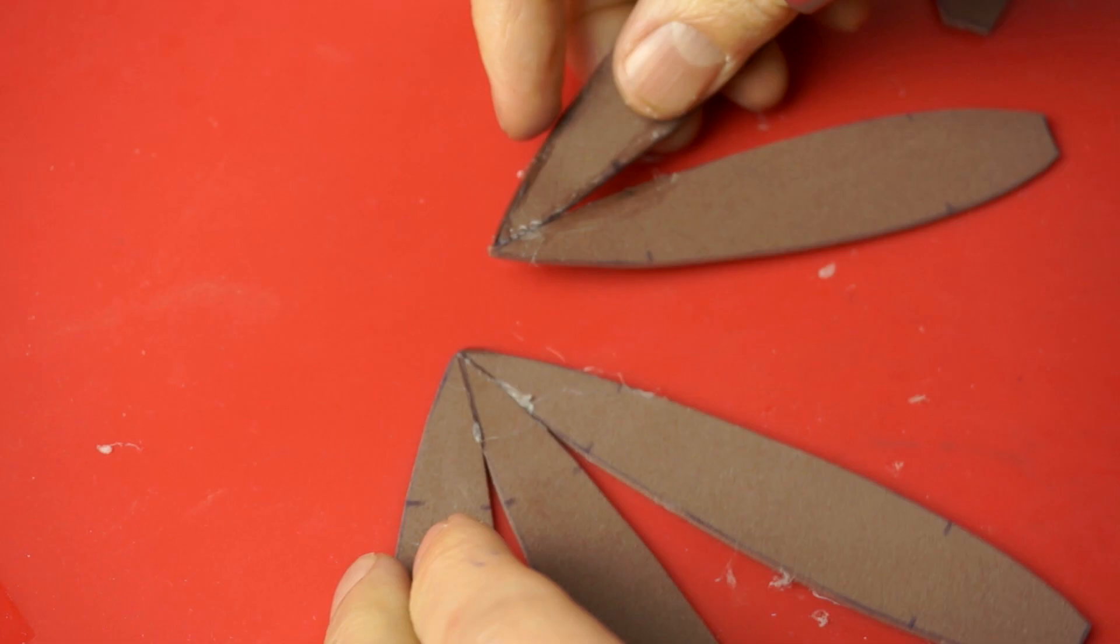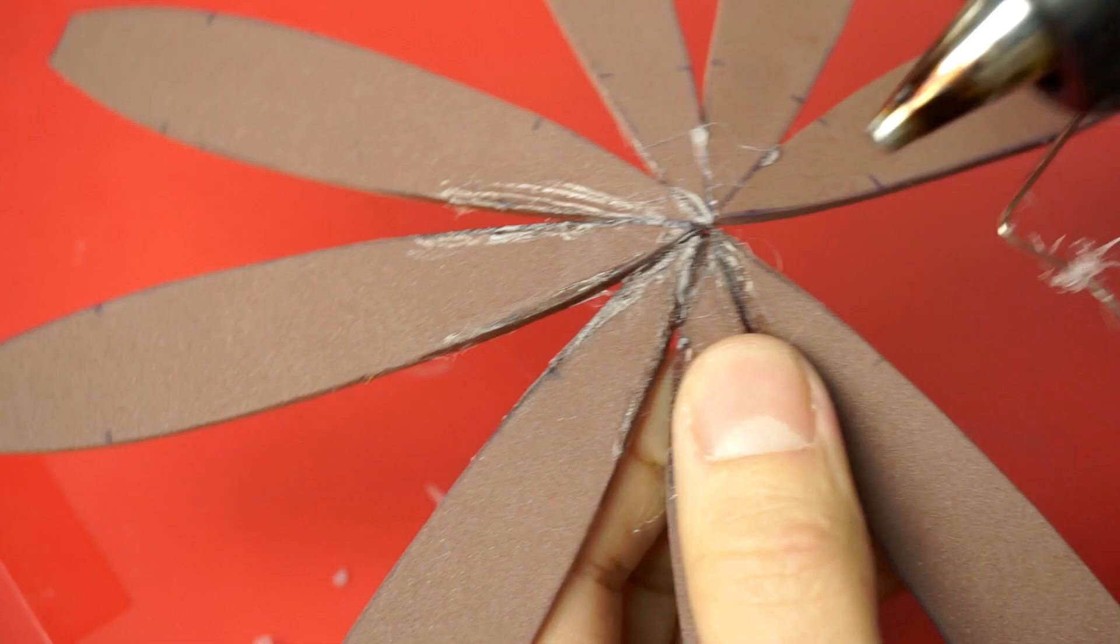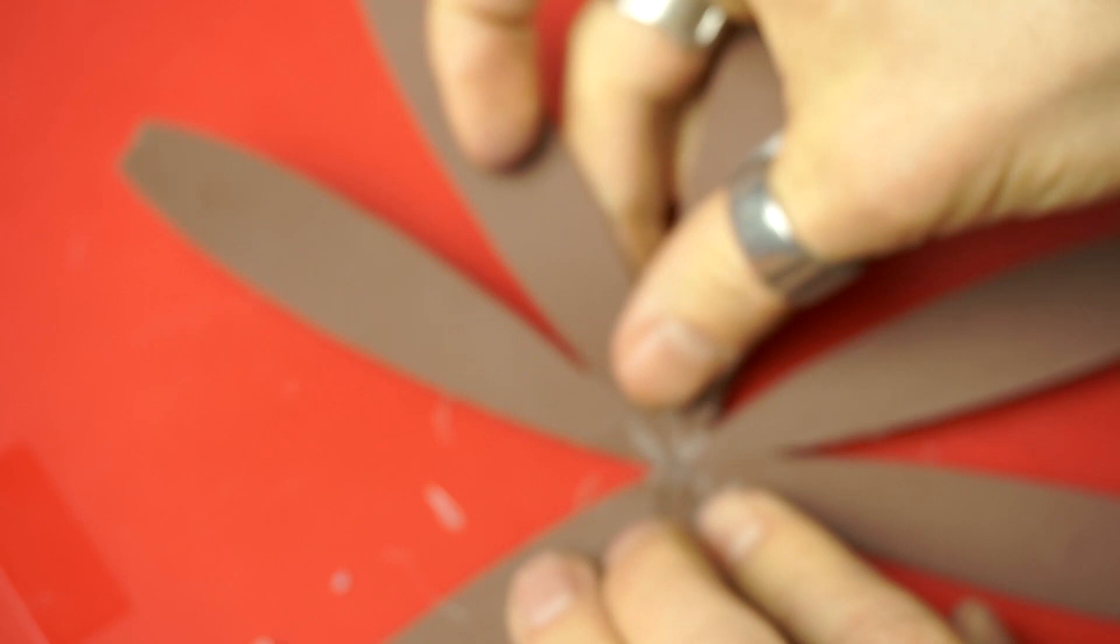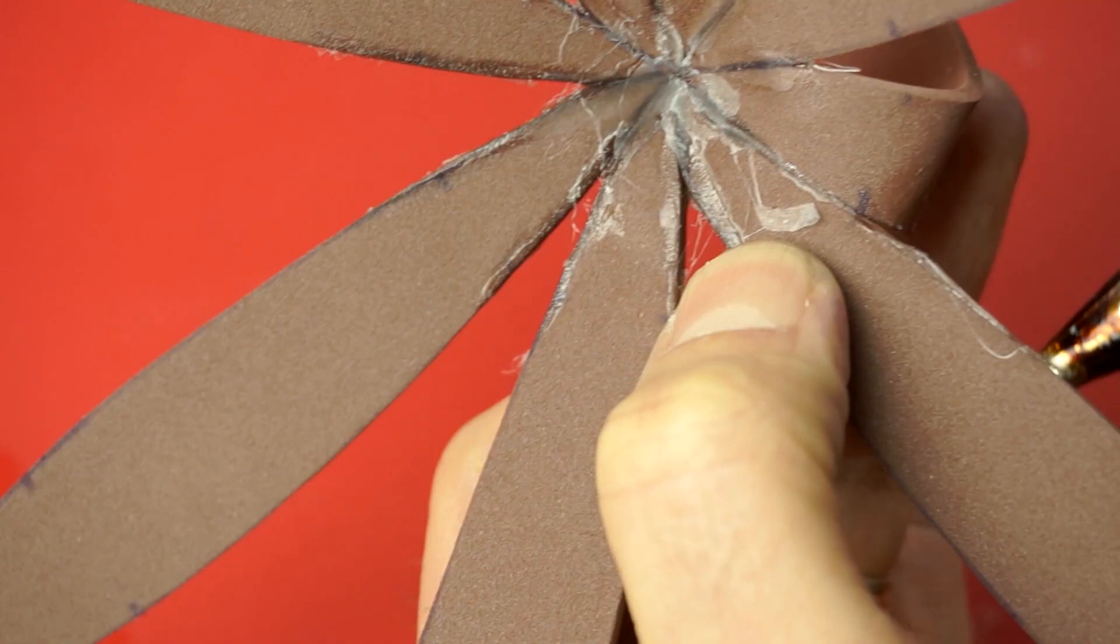Start by gluing just the tips of the eight body pieces together. You may notice there's a gap once all eight pieces are together. That's okay, just put some glue on it and force it closed.